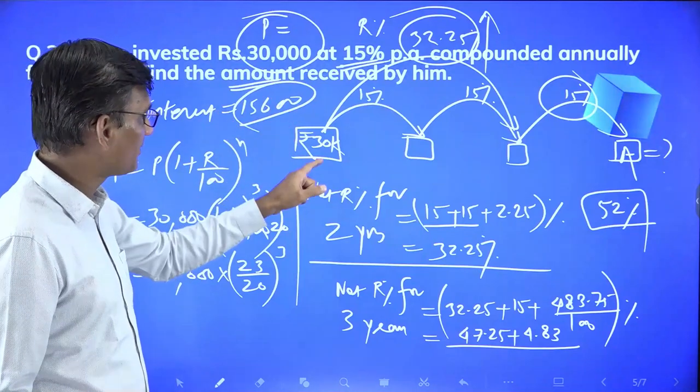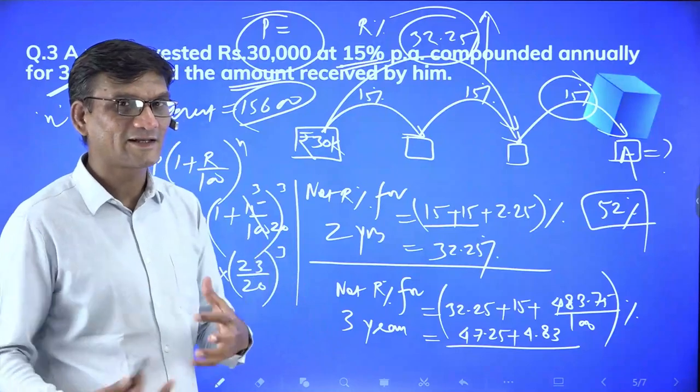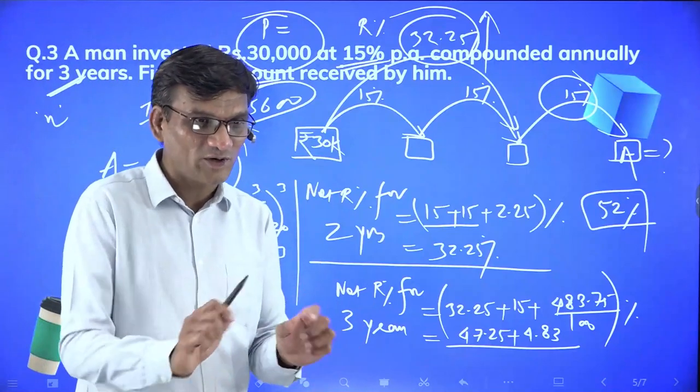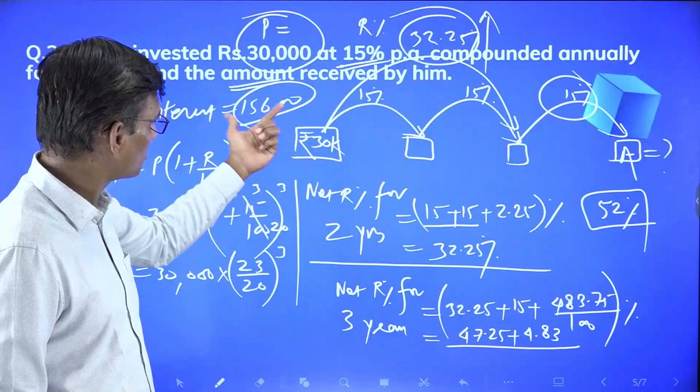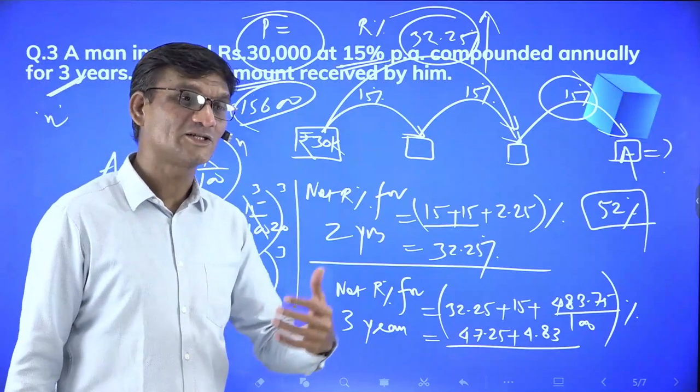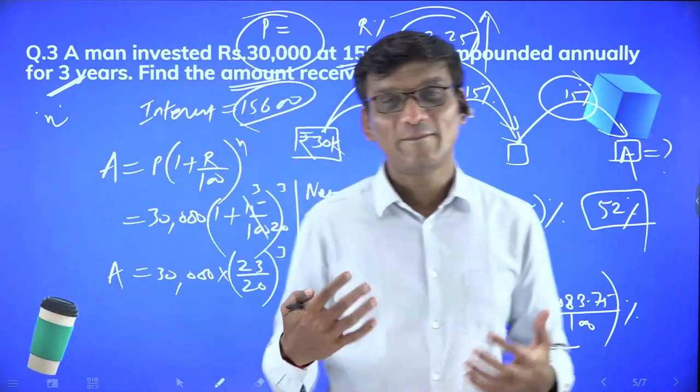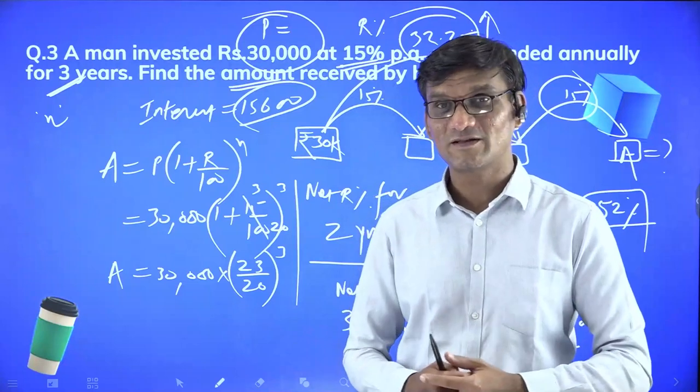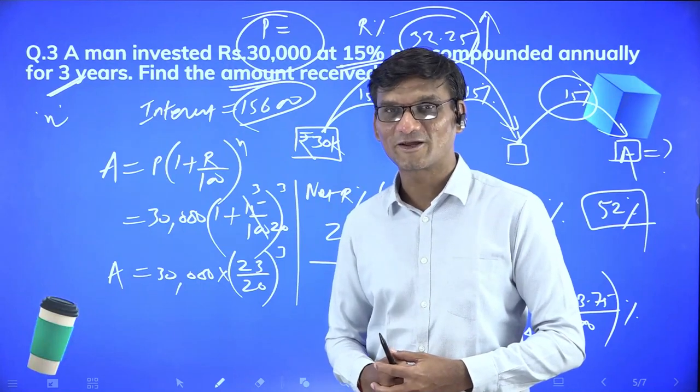So 30,000's 50 percent is 15,000, plus 2 percent more is about 15,600. So total interest is around 15,600, a bit more actually - around 52.1 percent. Principle plus interest gives amount: 30,000 plus 15,600 equals 45,600, slightly more. This is a different approach - with practice it becomes very fast for eliminating options.